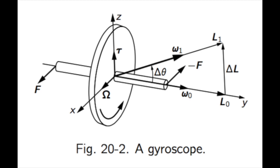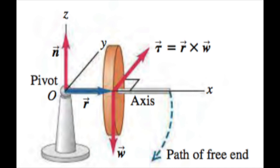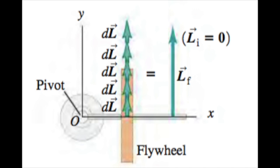When the flywheel is not rotating, its weight creates a torque around the pivot, causing it to fall along a circular path until its axis rests on the table surface. In falling, the flywheel acquires an angular momentum L in the same direction as torque T, and the flywheel axis falls.